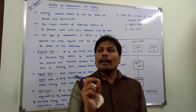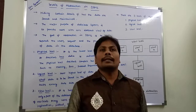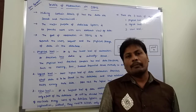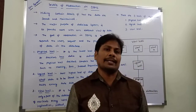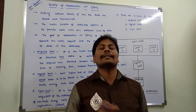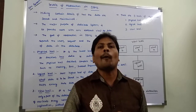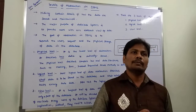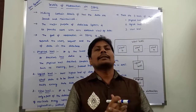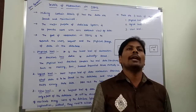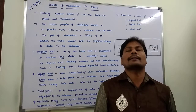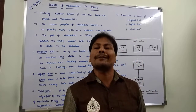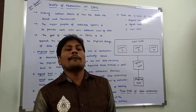The data is stored in the database in terms of tables or in terms of files. Data management refers to what operations can be performed on the data. The major purpose of a database system is to provide users with an abstract view of data. There are three levels of abstraction.